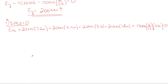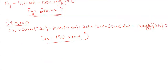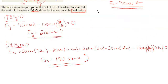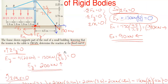E sub m is the only unknown in the moment equation, so we can rearrange and solve. Make sure to carefully track all pluses and minuses. The moment reaction comes out to be positive 180 kilonewton-meters. The positive sign confirms that our assumed counterclockwise direction was correct. Always include the arrow direction in your final answer — that is the complete solution for all three reactions.